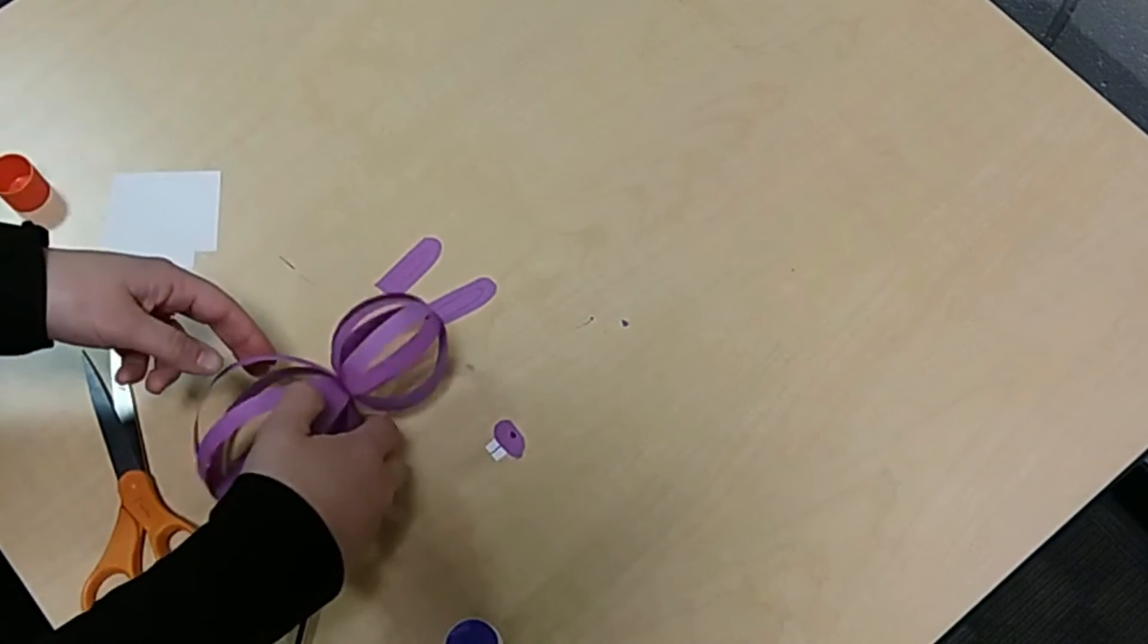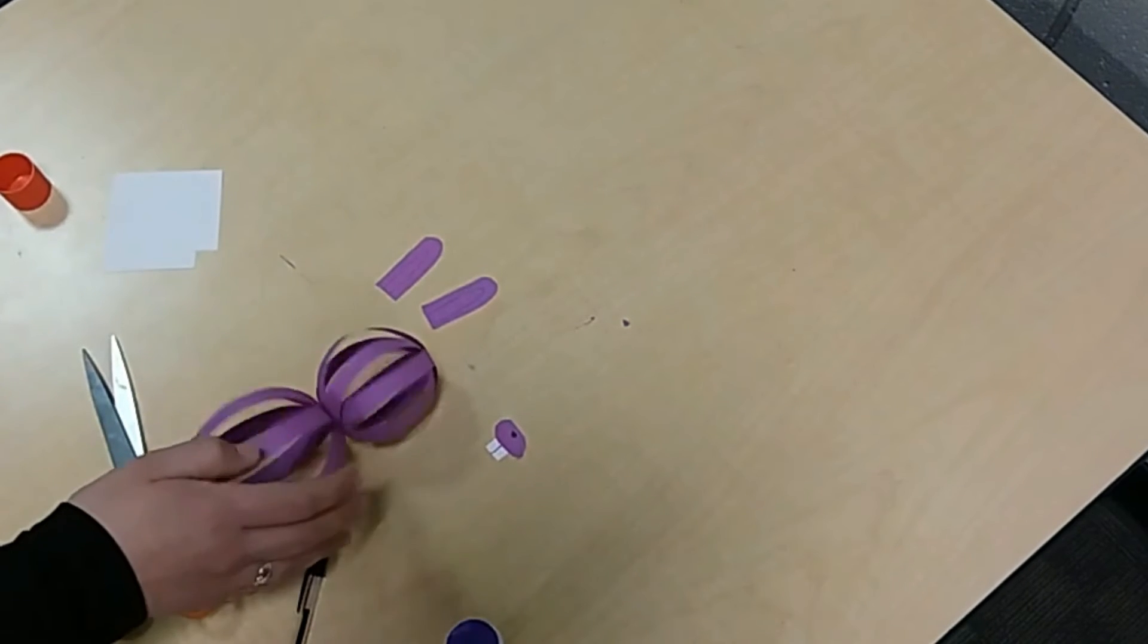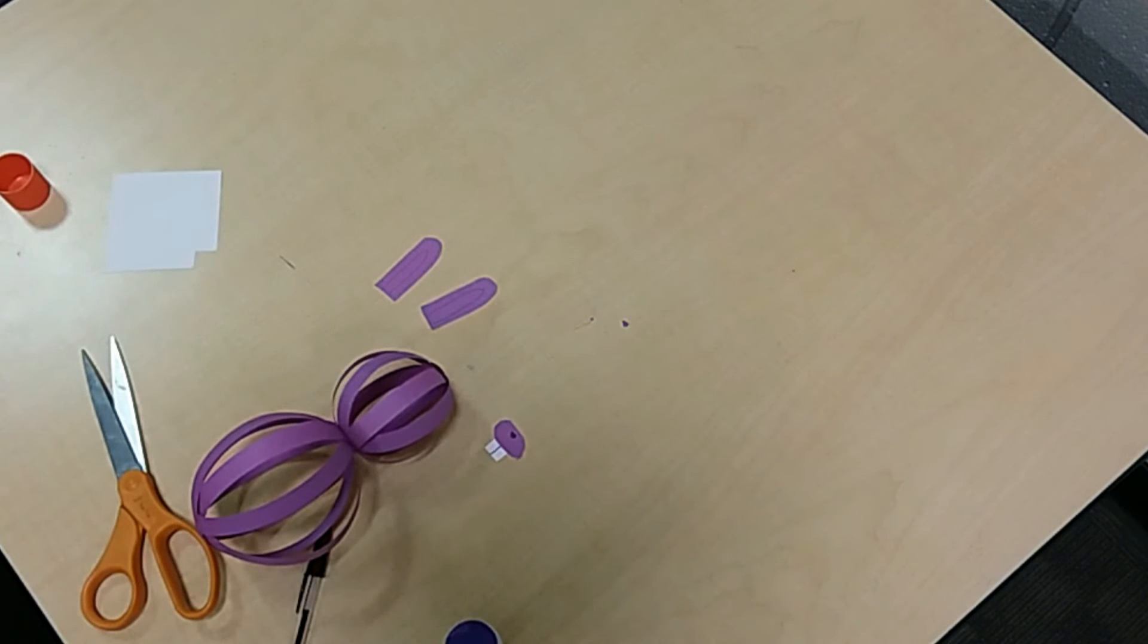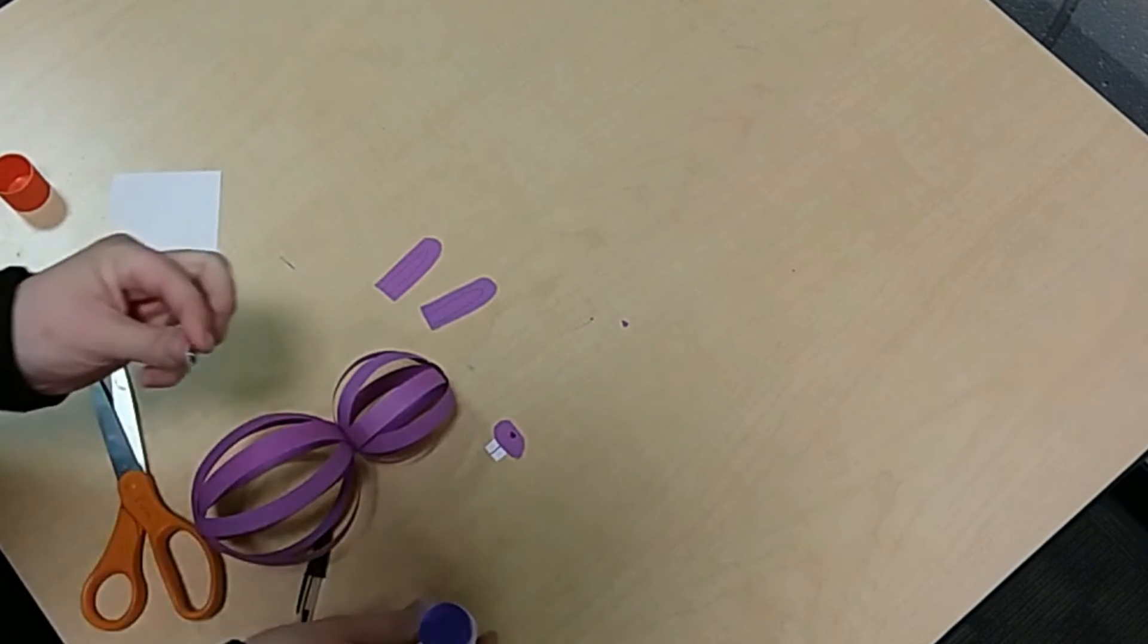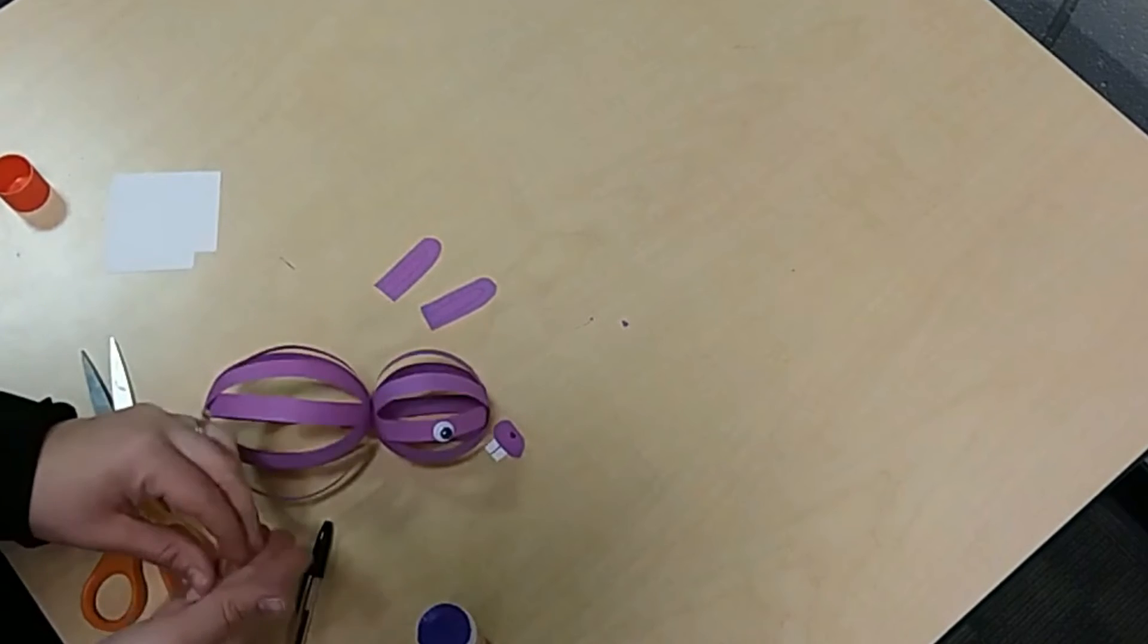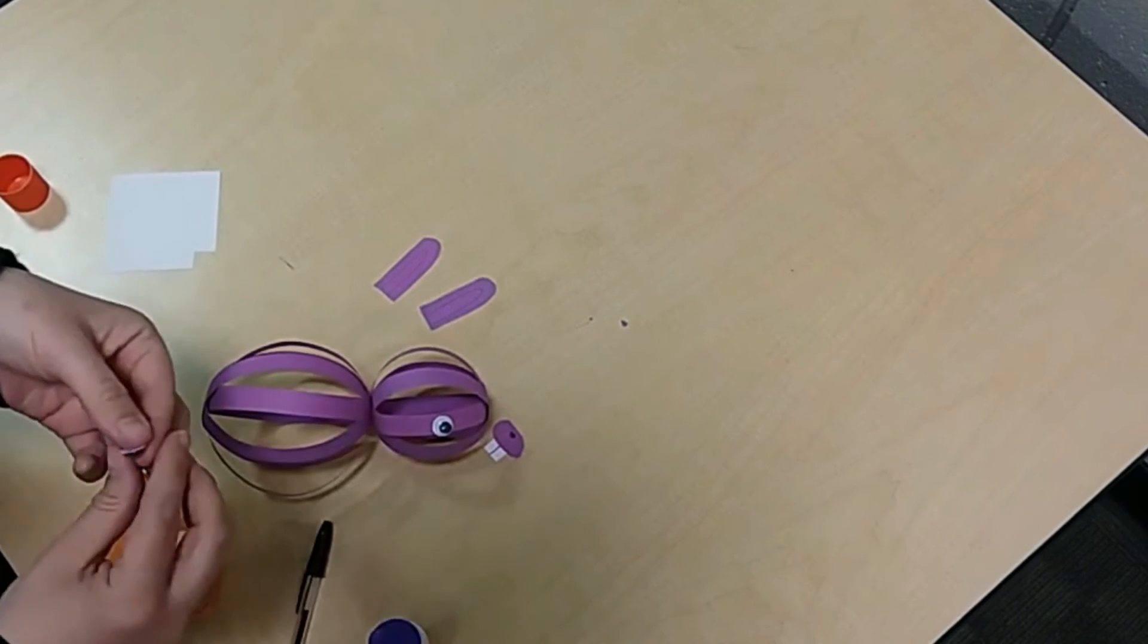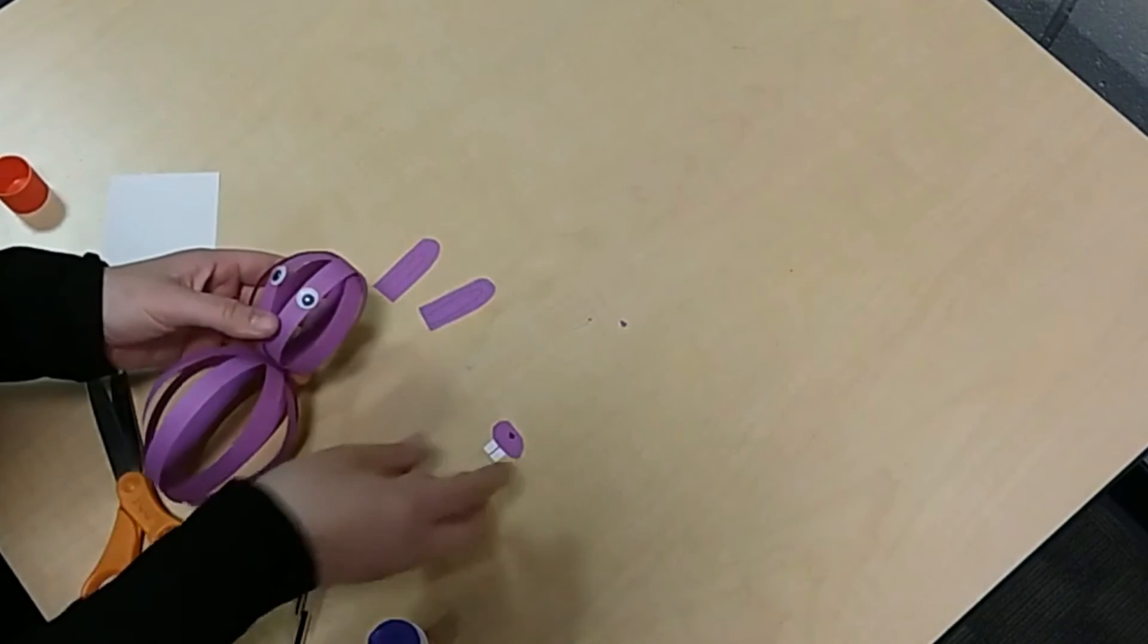Then I'm going to take my googly eyes. I'm going to glue the back and put one on the strip like this. Then I'm going to glue the other one and put it onto the strip right next to it. Press down.